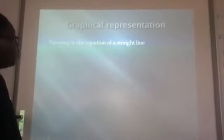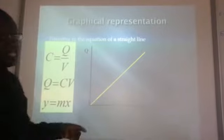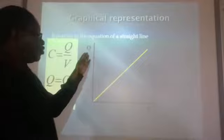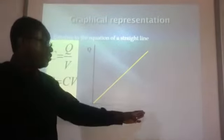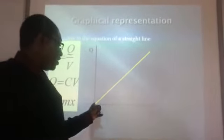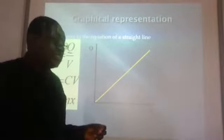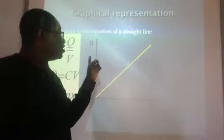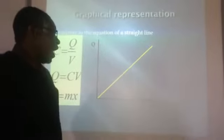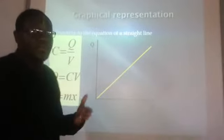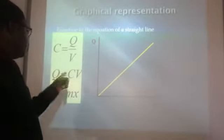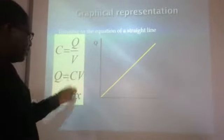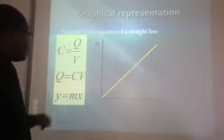For the graphical representation of capacitance: if a graph of charge stored against potential difference is plotted, it will have no y-intercept and will be a straight line from the origin, showing a direct proportion between charge stored and potential difference. The gradient of that graph gives us the capacitance C, in the form Y = MX where M corresponds to C.